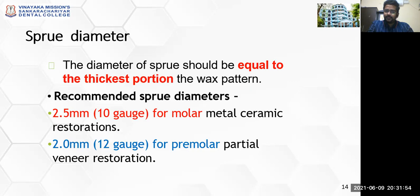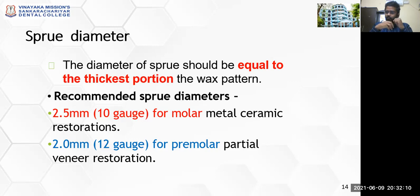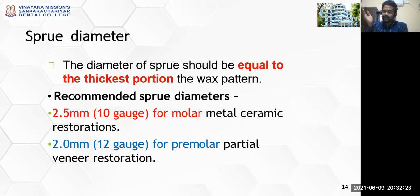Regarding sprue diameter: it should be equal to the thickest portion of your wax pattern, as the wax pattern thickness varies depending on the type of prosthesis being fabricated. The ideal recommended sprue diameters are: for casting molars, approximately 2.5 mm (10 gauge); for premolars, around 2 mm (12 gauge); and for metal-ceramic on a molar, 2.5 mm.